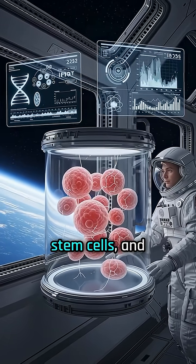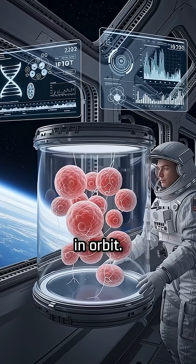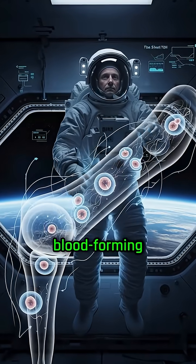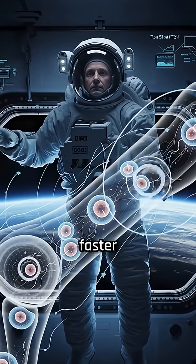Spaceflight can speed up the aging of your stem cells, and researchers just watched it happen in orbit. A recent study that sent human blood-forming cells into low-Earth orbit found they aged faster in space.